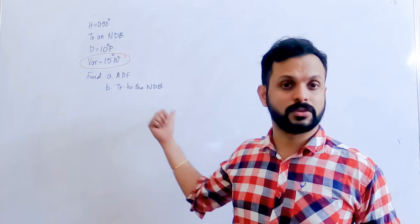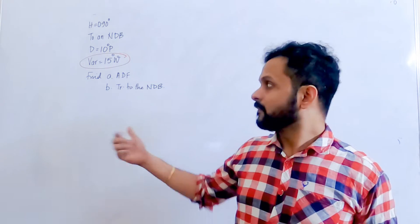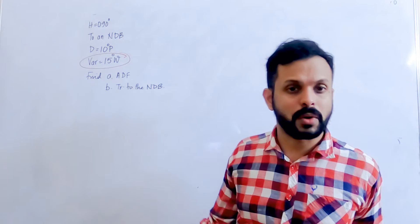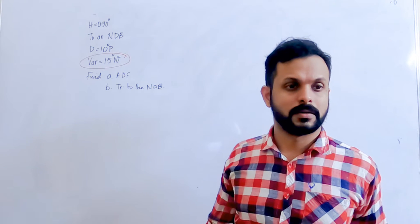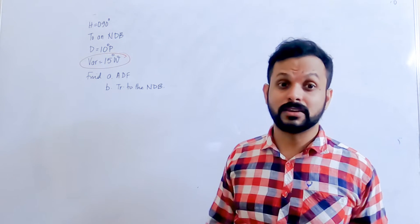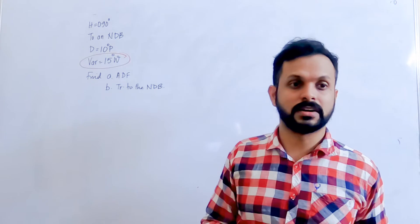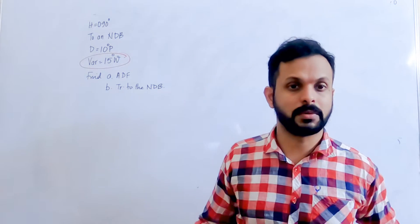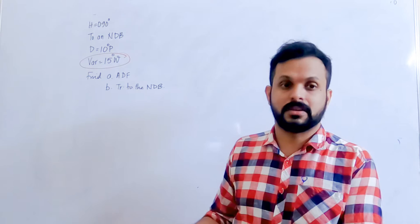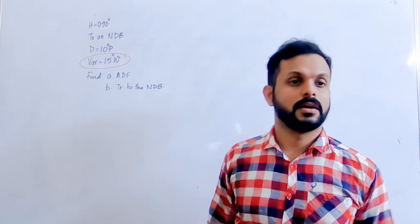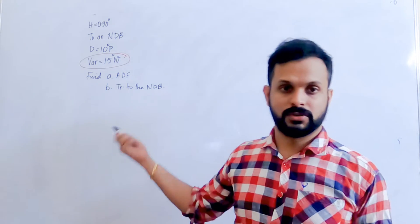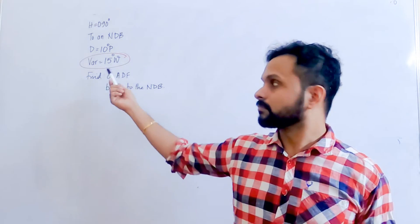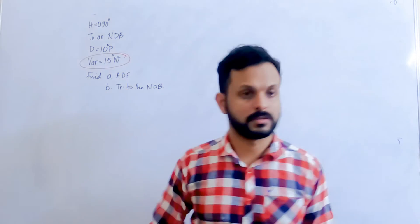That is why for all previous questions we never had variation given — because it is not required. The ADF simply points towards the NDB. As far as track differences are concerned, the relative bearing — which is the track difference — variation is not a concern.